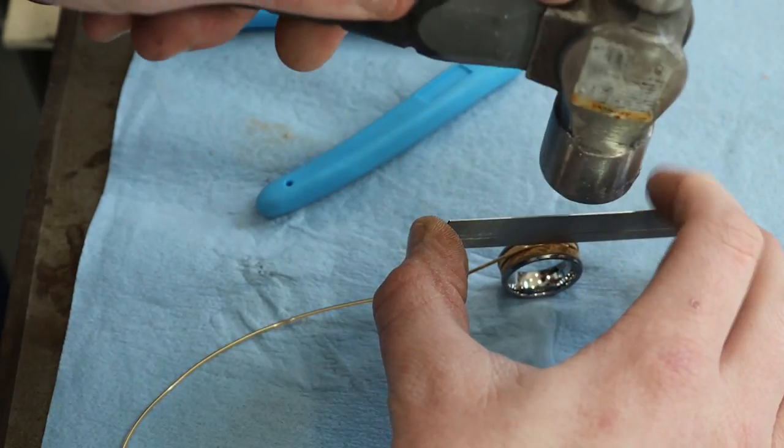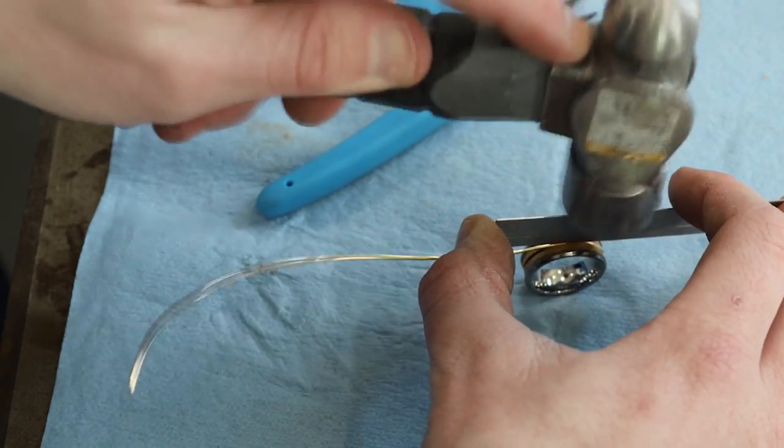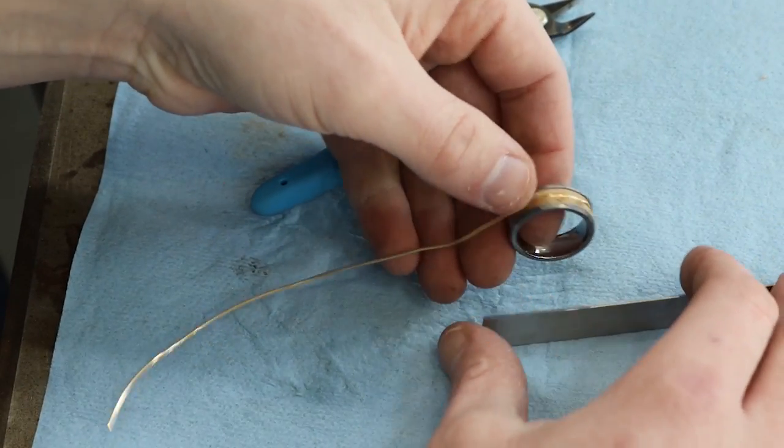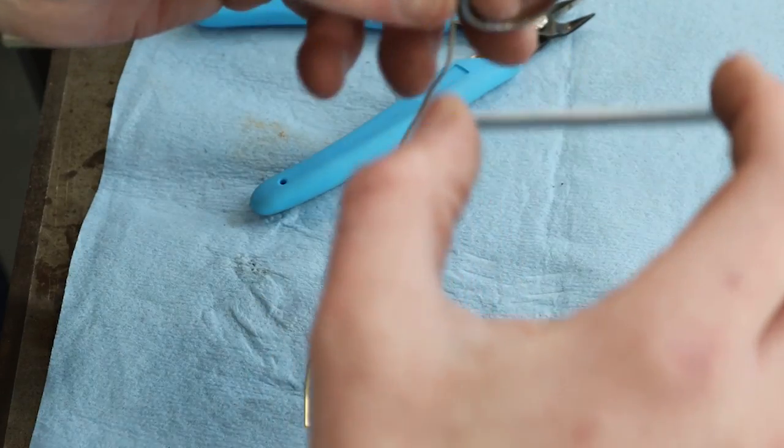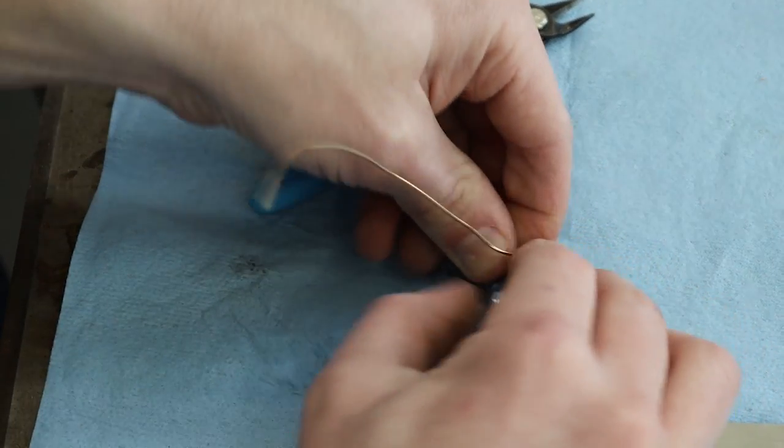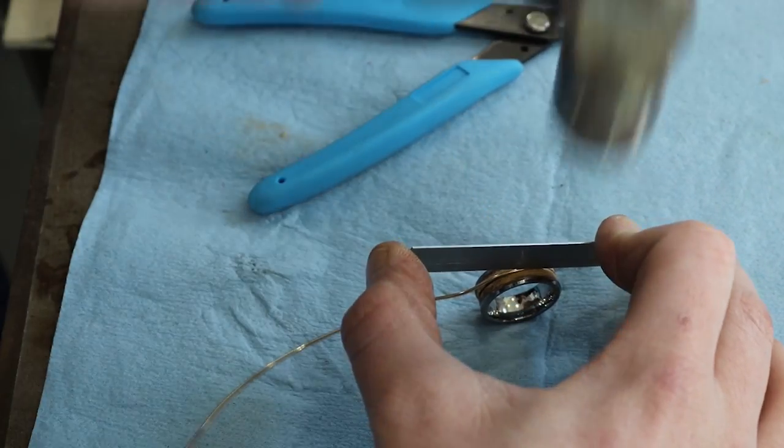Once I get a little bit more aggressive, you can see the gold is now sticking in the inlay just by force. At this point we're just going to go all the way around, making that force keep the gold in there again rather than glue.